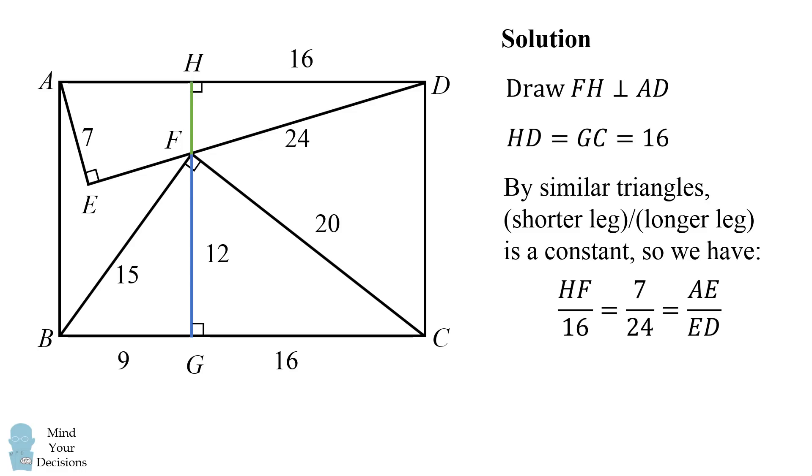So we have the following. In the smaller triangle, the shorter leg of HF to its longer leg of 16 is equal to, in this triangle, the shorter leg of 7 to the longer leg of 24. We can use this equation to solve that HF is equal to 14 over 3.